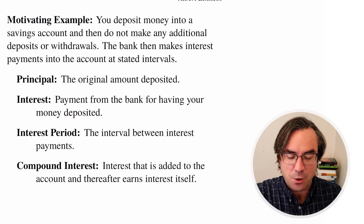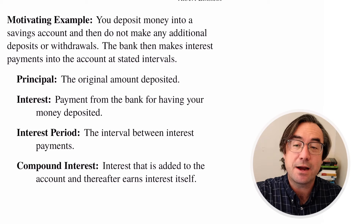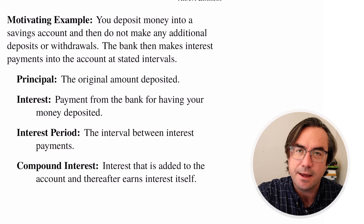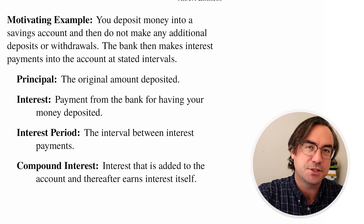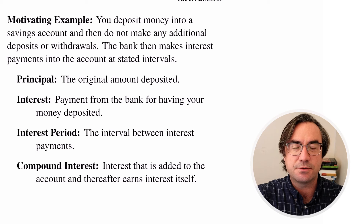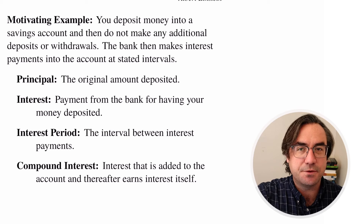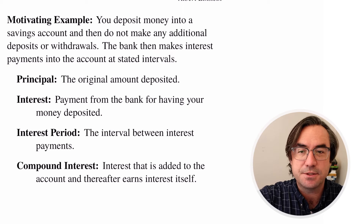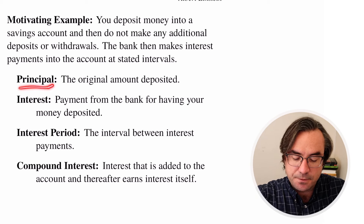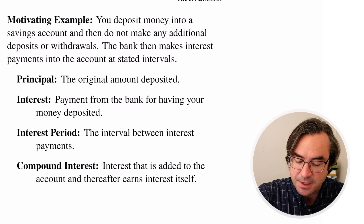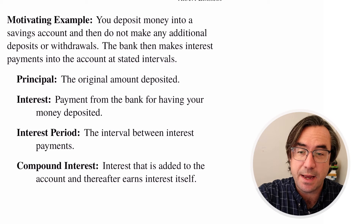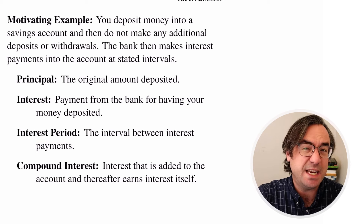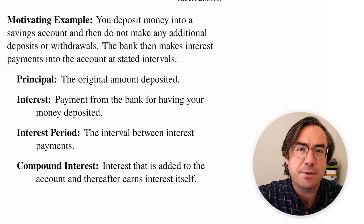Our motivating example here: we're going to be depositing money into a savings account, and then we're not going to make any additional deposits or withdrawals — we're just going to let the money sit. The thing with a savings account at a bank is the bank doesn't just let the money sit; it actually loans it out to other customers. So for the privilege of using your deposited money, the bank makes interest payments into your account at stated intervals. Principal is the original amount of money that we deposit. Interest payments are what we get from the bank for having our money deposited.